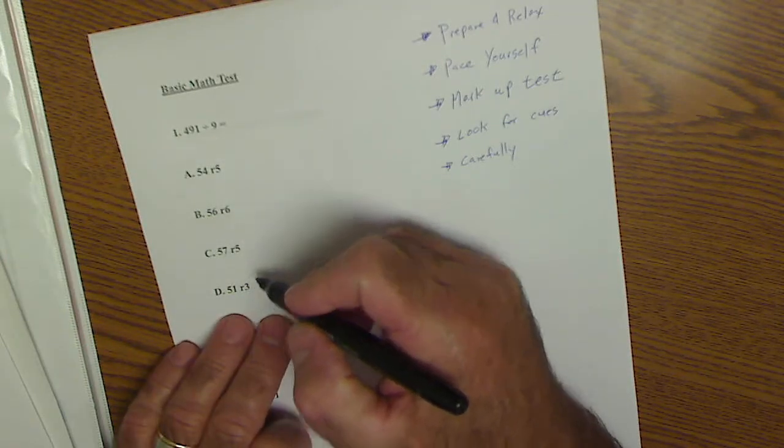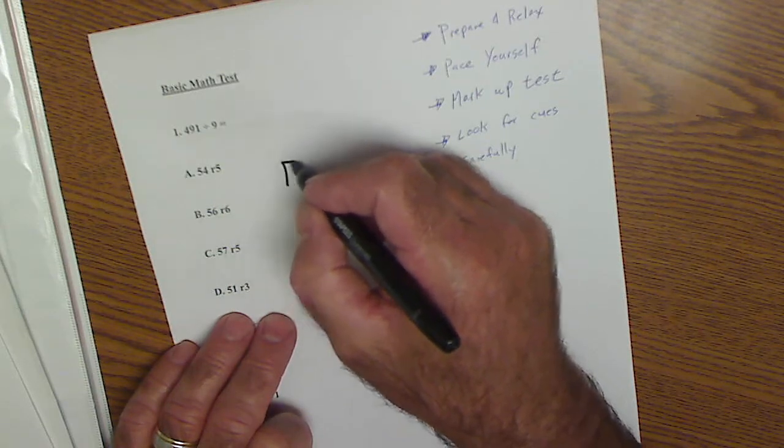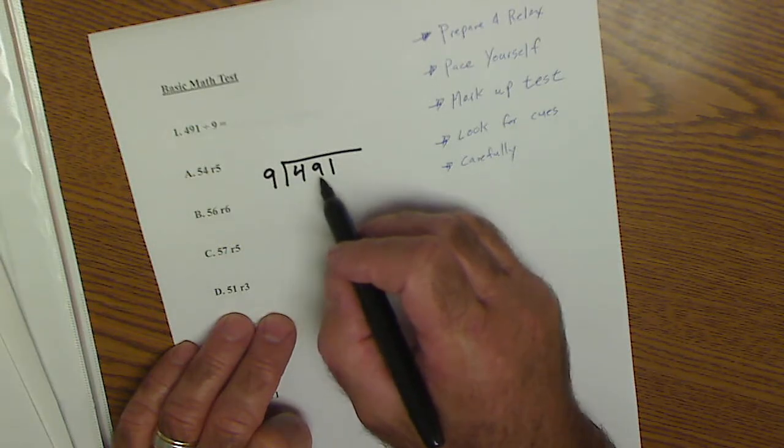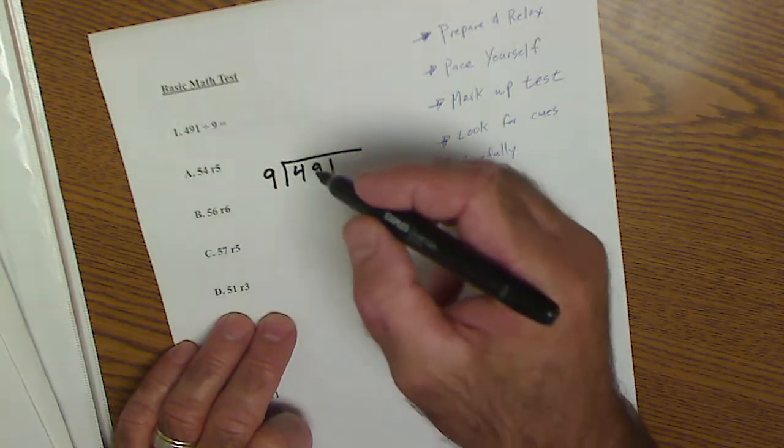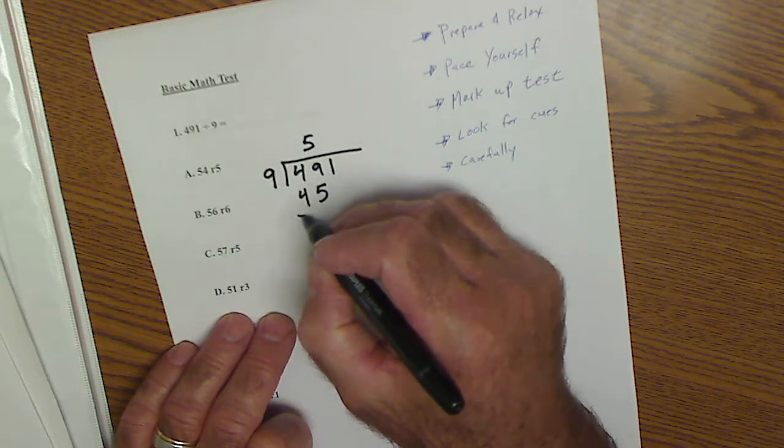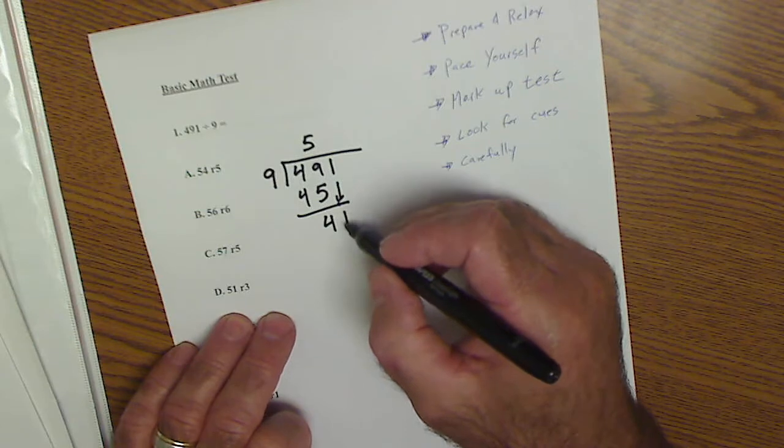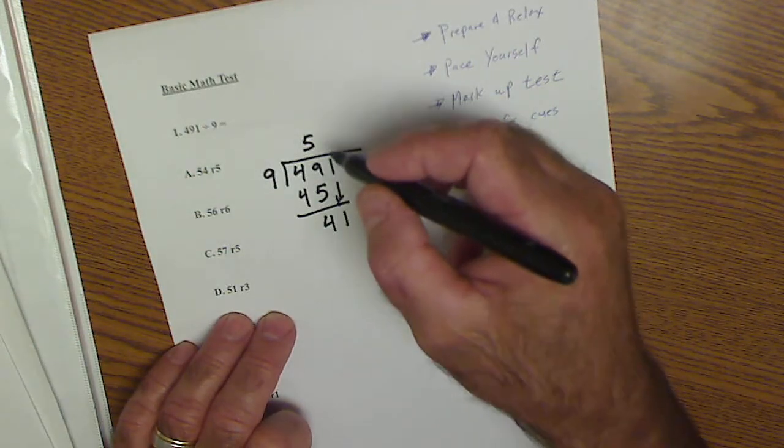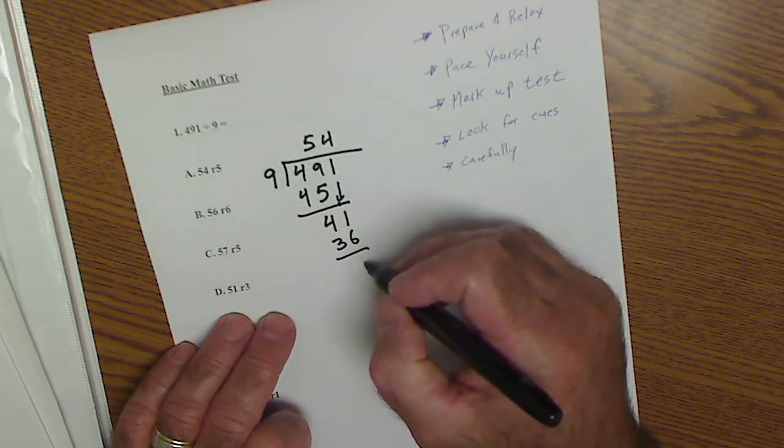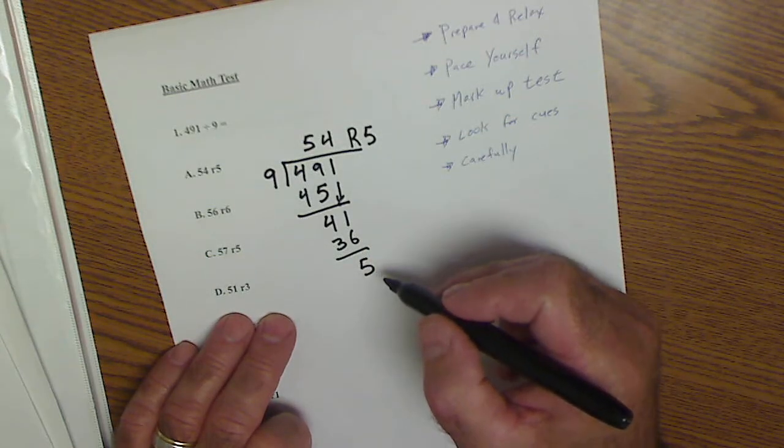The first problem is 491 divided by 9. I'm looking for a remainder. 491 divided by 9. It does not go into 4 but it does go into 49 five times, giving me 45. I subtract: 9 minus 5 is 4. Bring down the 1. 41. 9 goes into there 4 times to give me 36. 41 minus 36 is 5. So it's 54 with a remainder of 5. The first problem would be A.